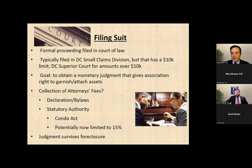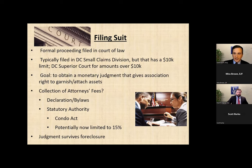Another good thing about judgments — other than being able to collect against an individual's assets — is that a judgment will survive a foreclosure. So if an owner gets foreclosed on, the association still has options to collect that debt even though that owner no longer owns in the association. You can still pursue wage garnishments, bank garnishments, etc. because you have a judgment against them as an individual. Those are the two ways you can go after the debt from a legal standpoint: against the property through assessment liens and foreclosure, or through a money judgment against the individual.